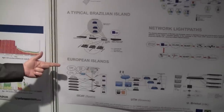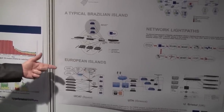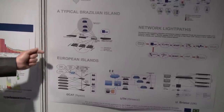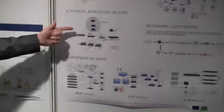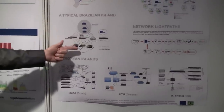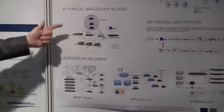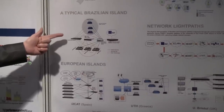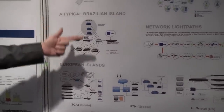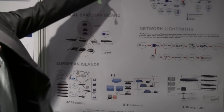And on top of these slices, the goal is to start with new future internet experiments. For instance, you can see the Brazilian islands. These Brazilian islands are composed by optical infrastructure with electrical infrastructure and with wireless infrastructure. These islands are heterogeneous because the infrastructure is heterogeneous.